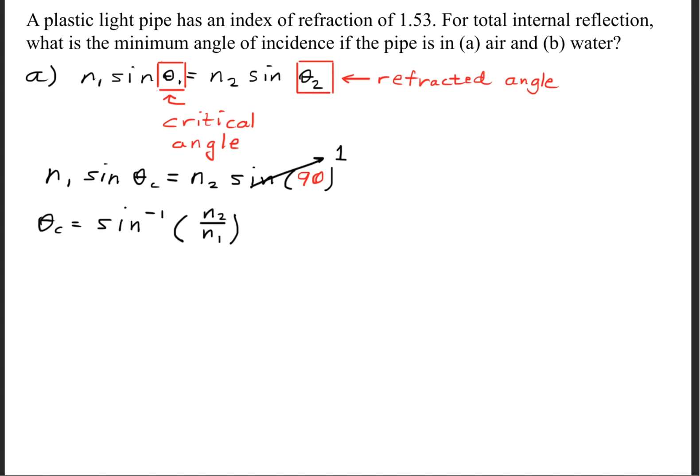The sine of 90 is simply 1. So we can rearrange the equation to solve for the critical angle. We get that the critical angle is the inverse sine of the second index of refraction divided by the first index of refraction.